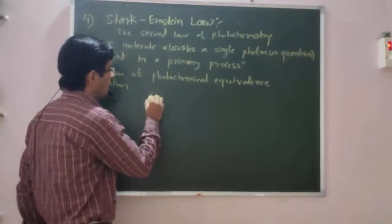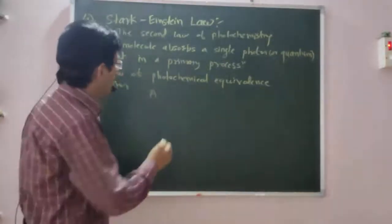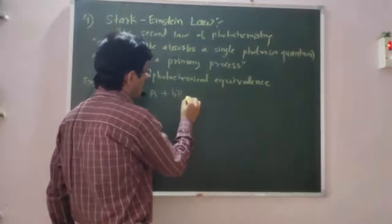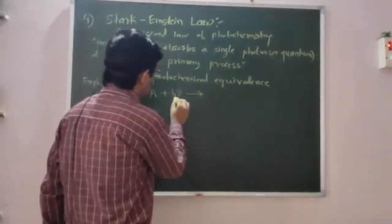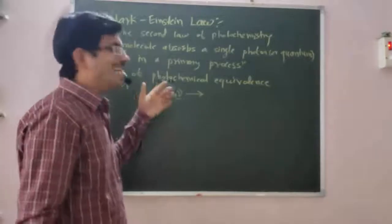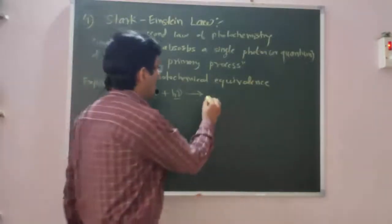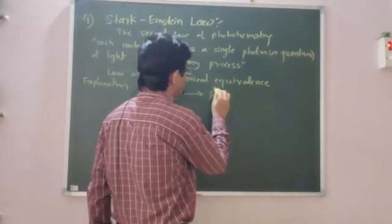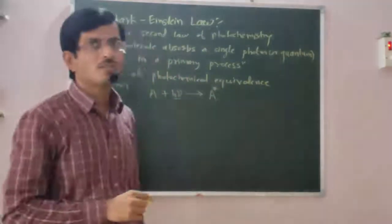Suppose the molecule A absorbs one photon, that is hν, and due to energy of the absorbed photon, this molecule gets excited. And the excited molecule is represented as writing this star on its head, A star.